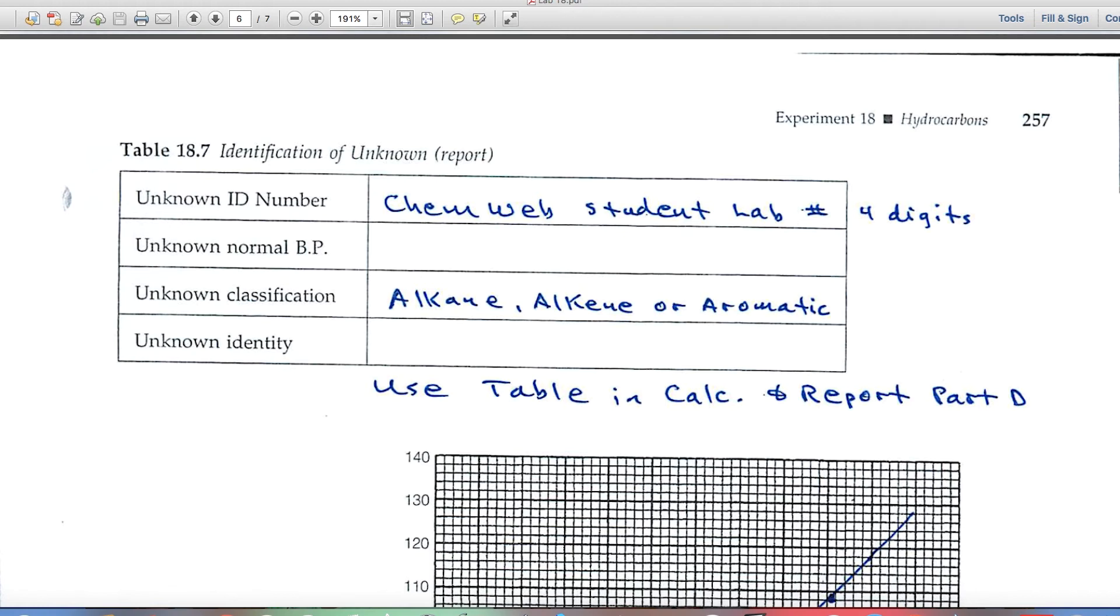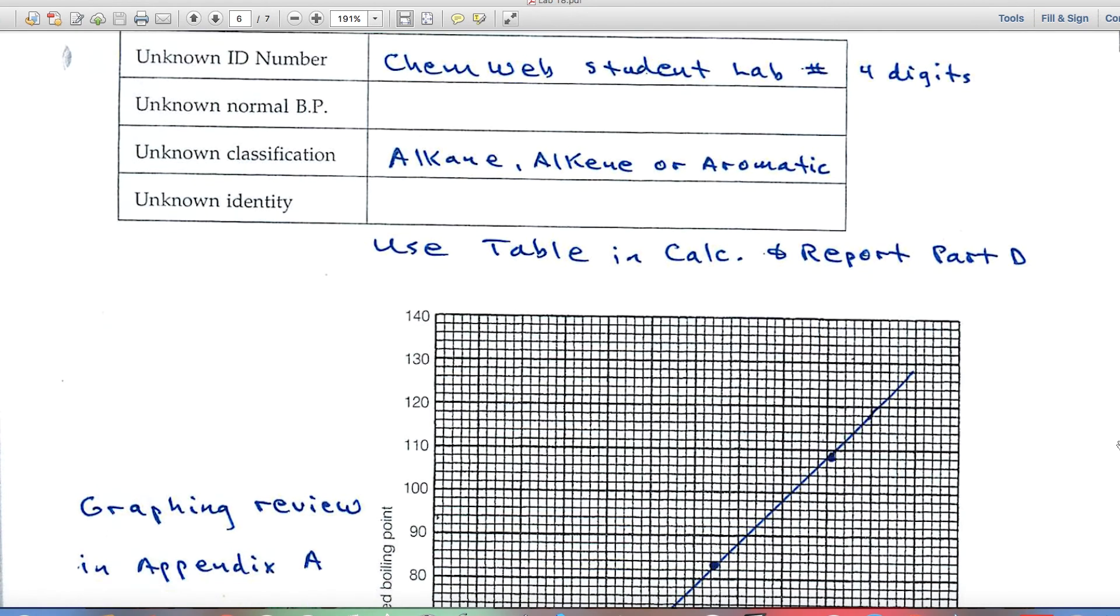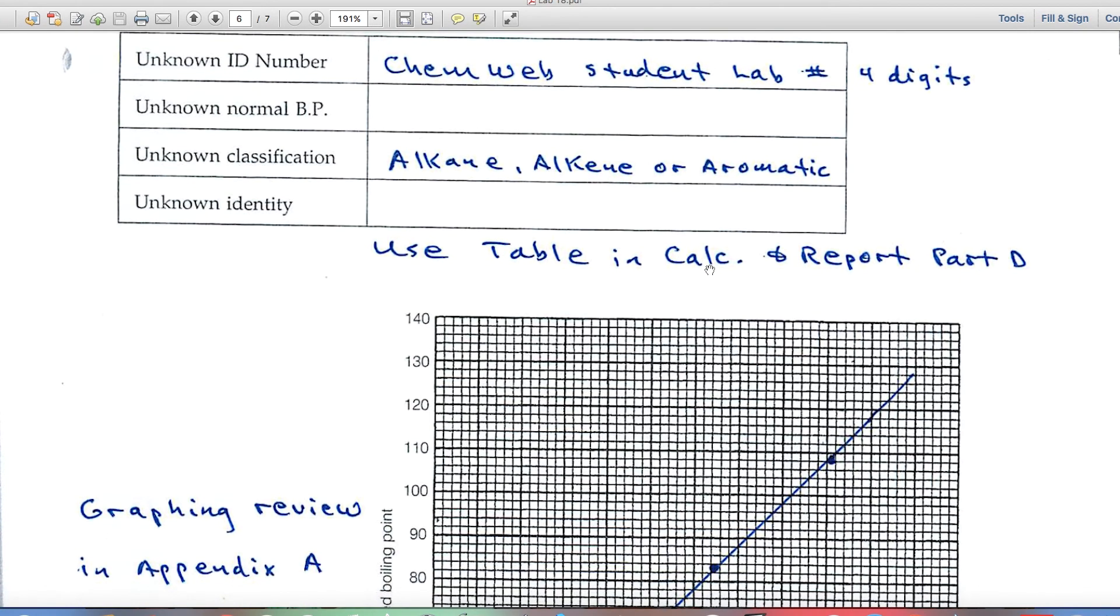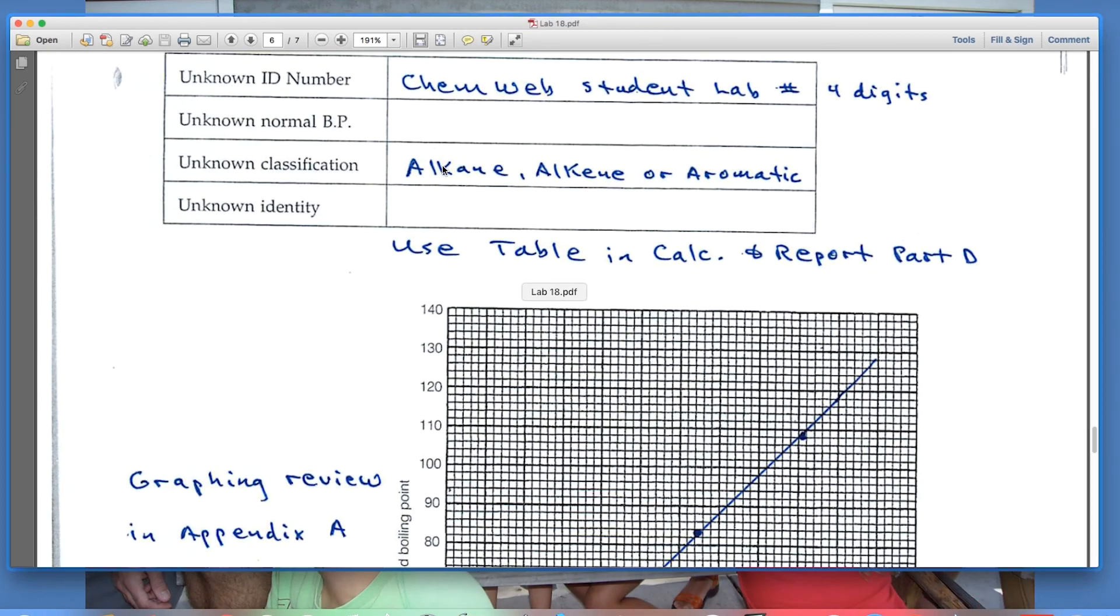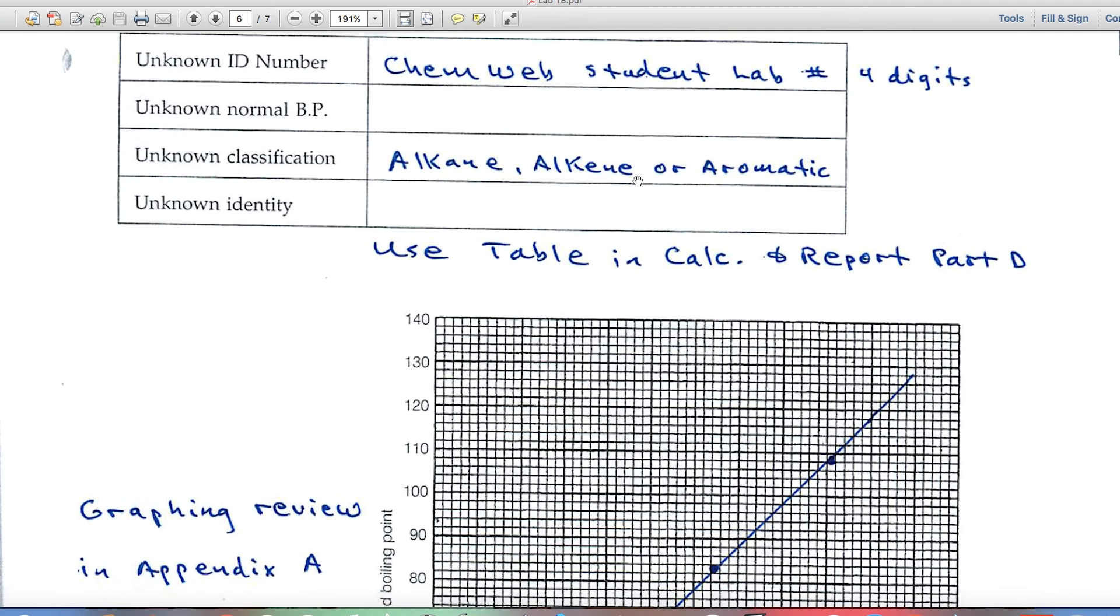In the calculations and report page in the text, there are three columns of compounds. A column of alkanes, a column of alkenes, and a column of aromatics. So if, for example, you identify your unknown as an alkene, then you'll use the boiling point to say which alkene it is.